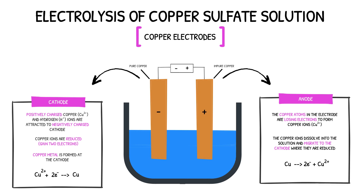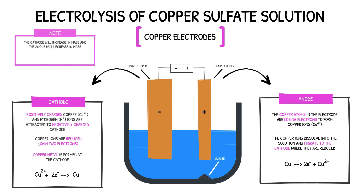The copper metal at the anode is impure, and thus any impurities from the impure copper anode will begin to form a sludge at the bottom of the beaker. At the end of the reaction, the cathode would have increased in mass and the anode would have decreased in mass. The gain in mass at the cathode is the same as the loss in mass at the anode. Therefore, the copper deposited at the cathode must be the same copper ions that were lost from the anode.